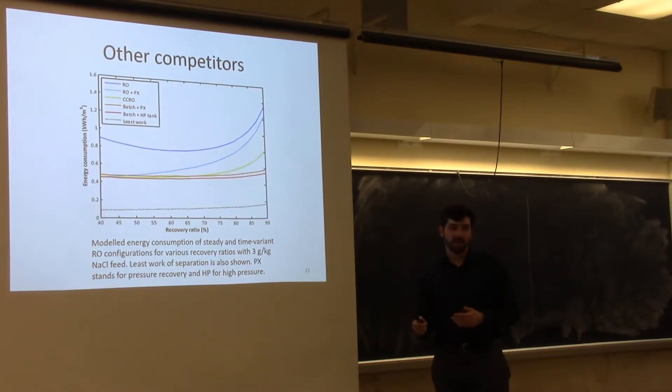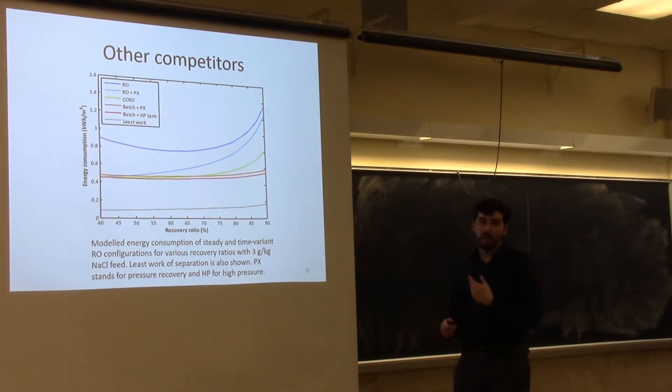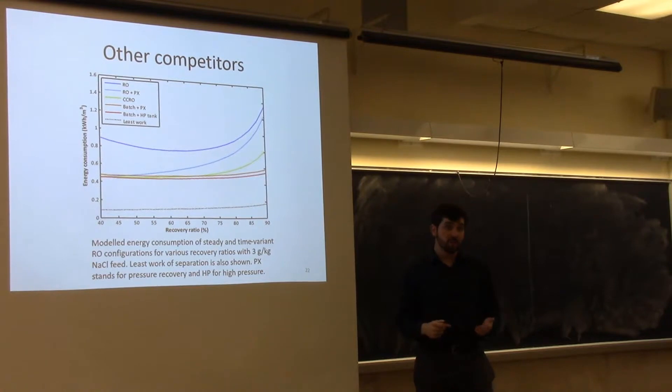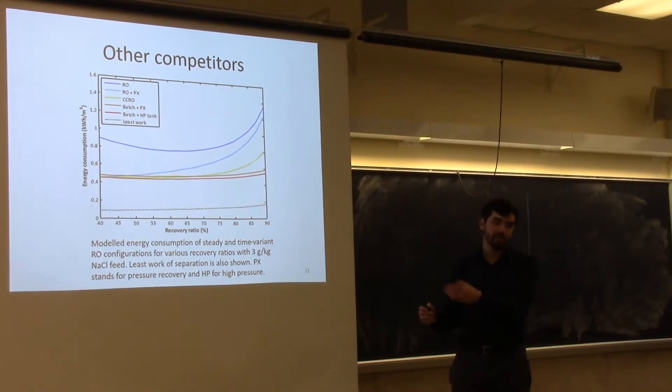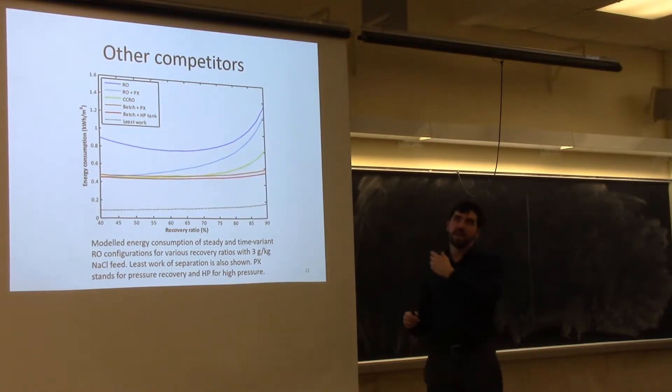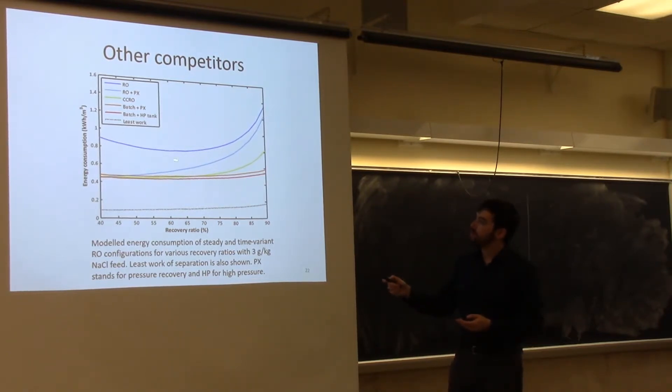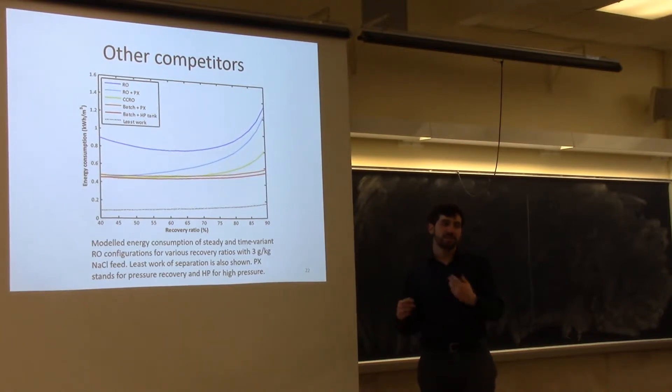This is a comparison of these two configurations to all the competition out there for relatively low salinity RO. This is regular RO, which is the main competition you see for recovery from agricultural wastewater. Typically, you're not using these PX or pressure recovery devices, because the energy savings are not as large for these low salinity systems. Realistically, our processes are here and the competition's up here. This is the most efficient conventionally available process, a semi-batch process called closed-circuit reverse osmosis, which is similar but has continuous mixing, so it's a little less efficient.